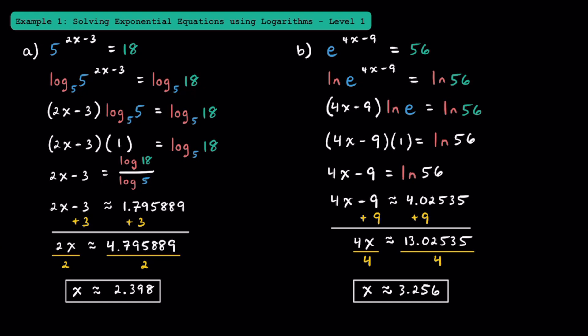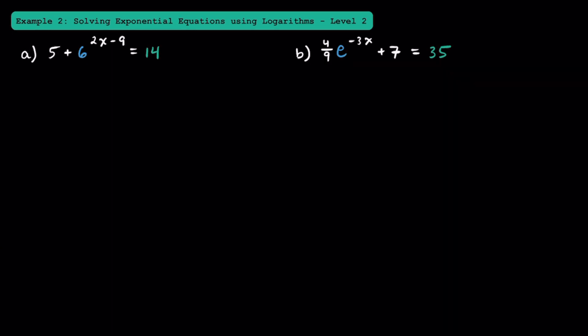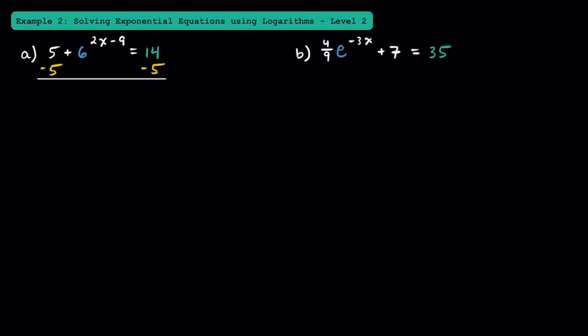Hopefully these types of problems make a little bit more sense now. In example 2, let's look at some slightly harder examples. Let's start with this one, where we have 5 plus 6 to the 2x minus 9 power is equal to 14. Before we can do anything with exponents or logs, we need to isolate this term and move this 5 to the other side. Subtracting 5 from both sides, we're left with 6 to the 2x minus 9 power on the left side, and 14 minus 5 is equal to 9.